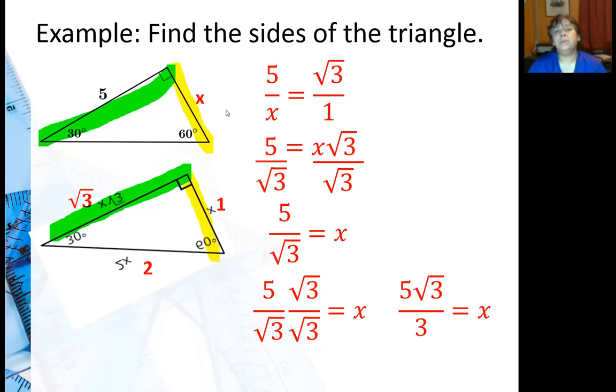Now I'm going to go ahead and use a shortcut. Since I know the short leg is 5 square root of 3, the hypotenuse, which I don't have up here, is just twice that. So I'm just going to say 2 over 1, which is the same thing as multiplying by 2, times 5 square root of 3 over 3. And that gives me 10 square root of 3 over 3 is the hypotenuse.